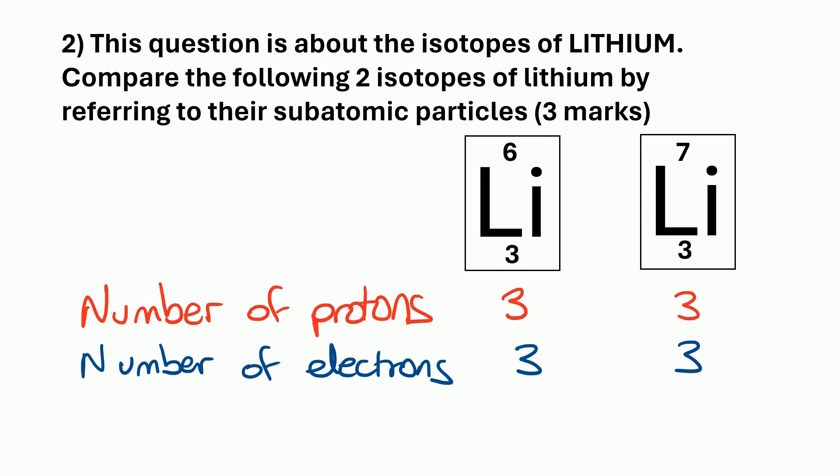And then to get the number of neutrons, we do the mass number, take away the atomic number. So lithium 6 has three neutrons, six take away three, whereas lithium 7 has four neutrons, seven take away three. So now we've written that information somewhere on our exam paper, now we'll get into actually answering that question.